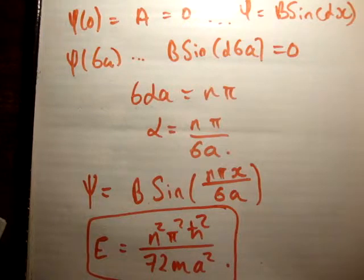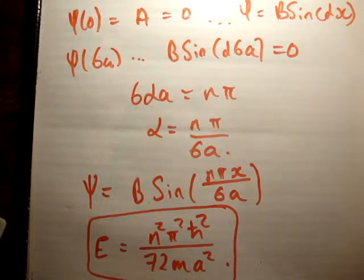What conclusions can we draw from this? Well, first of all, when you increase the width of the well, you decrease the energy of the wave function inside the well, because we have a factor of 72 below the line here, where the last time we had a factor of 8.